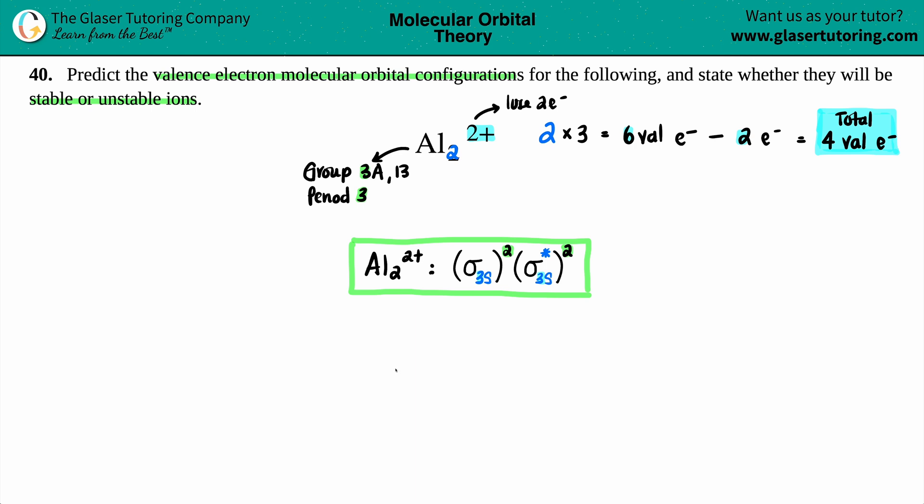Now we just have to say whether Al₂²⁺ is going to be stable or unstable. Well, this now comes from the bond order. Now, generally speaking, the thing here is that you don't want to see a zero when we do our formula. If you have a zero, that means no bond is going to form, and that's an unstable ion. So let's see. What's the bond order formula? It's this one right here. So bond order equals your number of bonding electrons minus your number of antibonding divided by two.